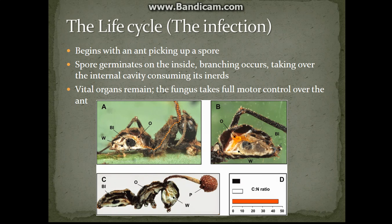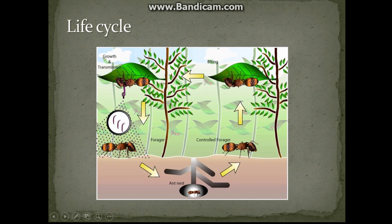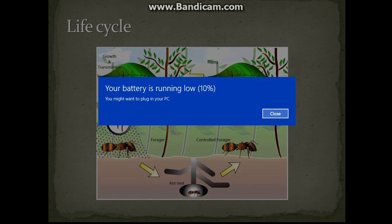At that point, the fungus will actually alter the behavioral patterns of the ant in order to benefit its own needs. The fungus will have full motor control of the ant and will be able to guide it where to go for the remaining hours of its life. The fungus will guide the infected ant to an area with a suitable temperature and humidity for optimal fungal growth, and once a suitable area is found, it will control the ant to walk to the underside of a nearby leaf.